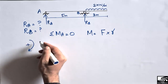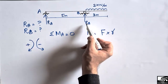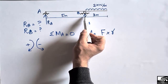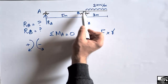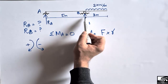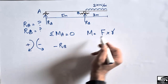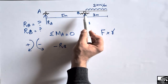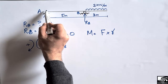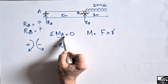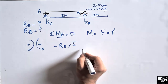Let's suppose clockwise moment is taken as positive and anti-clockwise as negative. RB will create a moment in the anti-clockwise direction, so it is taken as negative. RB is force multiplied by its moment arm, and the moment arm for RB is the distance from point B to point A, which is 5 meters.